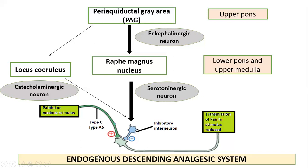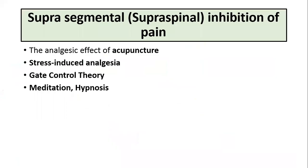This is called the supra-spinal inhibition of pain, also called the endogenous descending analgesic system. The supra-spinal inhibition of pain is the reason for the analgesic effect of acupuncture. Acupuncture activates the ascending sensory pathway, which emits collaterals in the periaqueductal gray area and the brainstem nucleus raphe magnus and locus coeruleus, and causes the supra-spinal inhibition of pain.